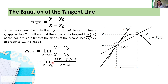Which is equal to the limit of [f(x) minus f(x₀)] all over (x minus x₀) as x approaches x₀. We know that y = f(x) and y₀ = f(x₀).